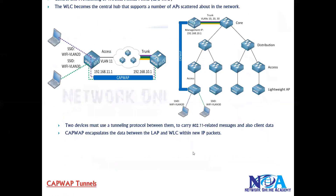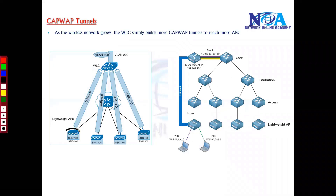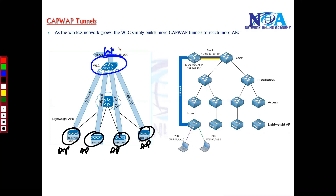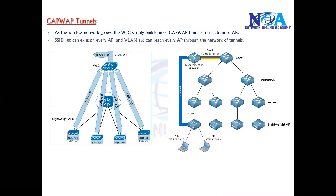As the network grows with more access points, every access point builds its own centralized CAPWAP tunnel. A separate tunnel is established between each access point and the WLC, so the WLC acts as a central hub connecting to all access points.